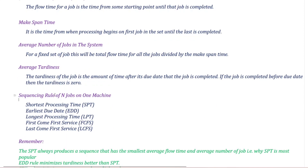Next, the sequence rules for n jobs and one machine. There is one machine but there are n jobs. The first sequence rule is Shortest Processing Time (SPT): the job with the shortest processing time will be arranged first. Next is Earliest Due Date (EDD): your due date will be least, then it will be arranged first. The next is Longest Processing Time (LPT): the job with the very longest process time is the first assignment.